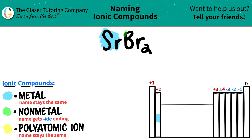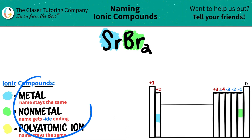Br, which is bromine, is a nonmetal. Bromine is in group 7A, or 17 — it's a halogen. Those are metals over there, and that's nonmetal territory over here. So now we have a metal and a nonmetal, which means it's an ionic compound. So now we're ready to name.